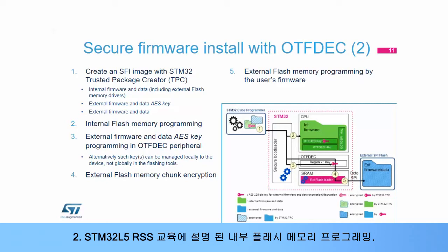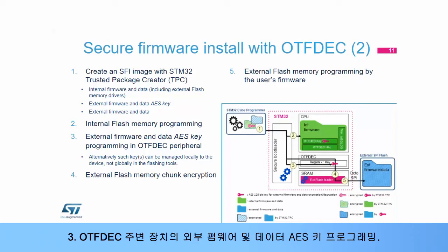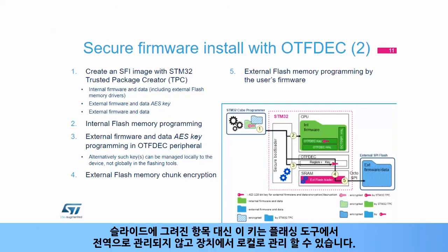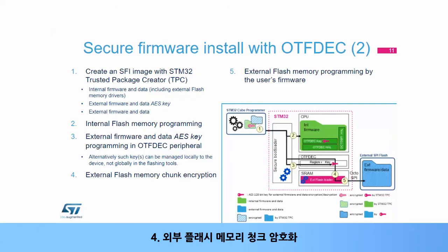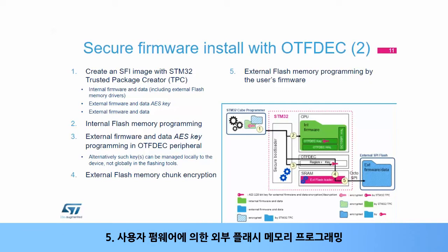Third step: perform external firmware and data AES key programming in the OTF-DEC peripheral. Alternatively, this key can be managed locally to the device rather than globally in the flashing tools. Fourth step: perform external flash memory chunk encryption. Fifth step: perform external flash memory programming by the user's firmware.